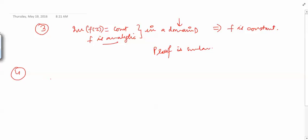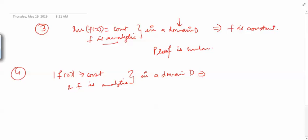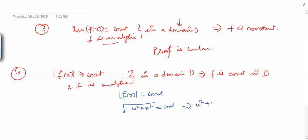So if you are given only that the real part is constant and f is analytic in a domain, then automatically the imaginary part will also be constant. Similarly, if Im(f(z)) = constant and f is analytic in a domain D — where domain means open connected — it implies that f is constant. The proof is similar. One more result: if |f(z)| = constant and f is analytic in a domain D, then f is constant.